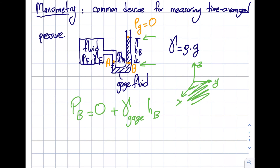I need to know the specific weight of the gauge fluid, which is reasonable, and I just measure h_p — so I know the pressure at point B. Now the question is: can I relate point A and point B? The answer is yes. Going down increases pressure, and traveling horizontally (in the negative y-direction) keeps pressure constant. If I go down and up through the same height in the same fluid, then P_a equals P_b.